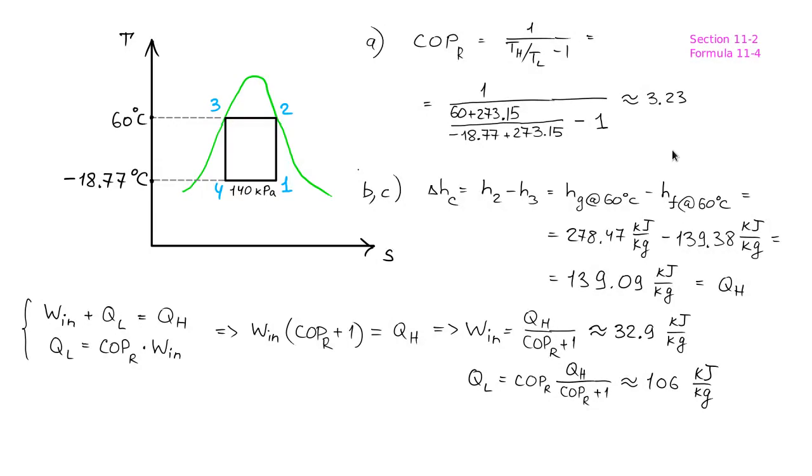To answer questions B and C, let's first find the amount of thermal energy per 1 kg of the refrigerant that's rejected in the heat sink in process 2-3.